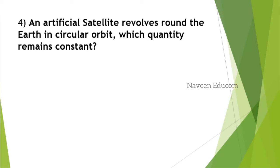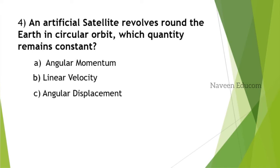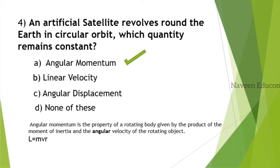An artificial satellite revolves around the earth in circular orbit. Which quantity remains constant? Not only for artificial satellites, but for any object that revolves in circular orbit, the quantity that remains constant is the angular momentum of the body. Angular momentum is given by the product of the moment of inertia and the angular velocity. The formula is L equals MVR, where M is mass, V is velocity, and R is radius.